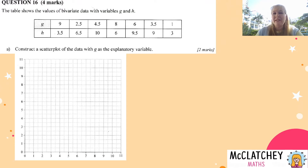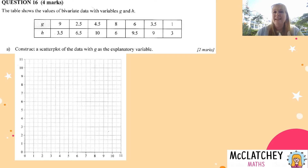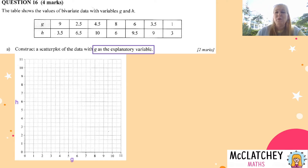Question 16 was a bivariate data question. We were given a table of bivariate data with variables g and h and asked to construct a scatterplot using g as our explanatory variable. Recall that explanatory means it goes on the x-axis — the way I remember is explanatory, x, x-axis. So we're going to label our x-axis with g and h will go on the y-axis as our response variable. Now we need to actually create our scatterplot using our graphing skills.